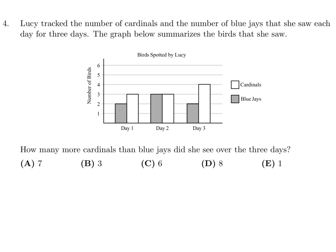Lucy tracked the number of Cardinals and the number of Blue Jays that she saw each day for three days. The graph below summarizes the birds that she saw. How many more Cardinals than Blue Jays did she see over three days? Cardinals, let's see, looks like this is 3, this is 3, and this is 4. So 3 plus 3 plus 4, which is 10.